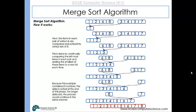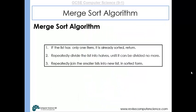To summarize the steps: if the list has only one item then it's already sorted, so we stop. Otherwise, we repeatedly divide the list into halves until it can't be divided any further. Then we repeatedly join the smaller lists into new lists in sorted form, just as we saw in the previous slides.